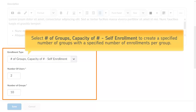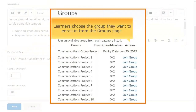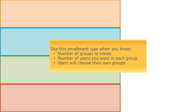Select 'Number of Groups Capacity of Number Self-Enrollment' to create a specified number of groups with a specified number of enrollments per group. Learners choose the group they want to enroll in from the groups page. Use this enrollment type when you know how many groups you will create, you want to allow learners to choose their own groups, and you want each group to have a maximum number of users.